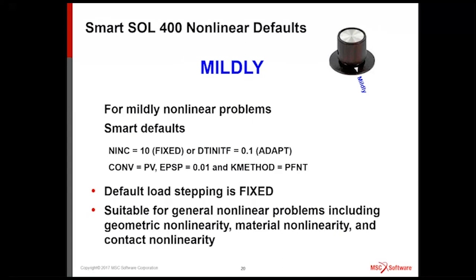Default is fixed. So this one we'll look at more detail later. Mildly is good for general nonlinear problems. Starting out with geometric nonlinearity, you can add material, plasticity, and you can add contact. It works very well with all these. By the way, when mildly doesn't converge, it doesn't mean you jump to severely right away. Even though you selected mildly, you can go in there, you can override some of these defaults. For example, you can say mildly, but I want to take 20 increments or 50 increments. So you can do that very easily and just rerun the job.